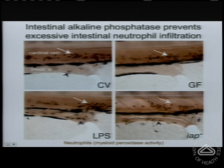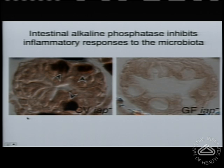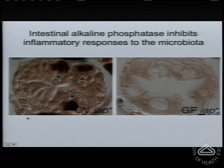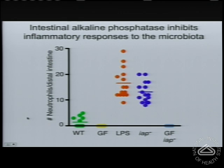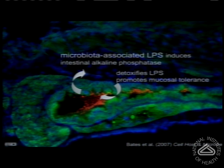To test whether this enzyme modulates responses to microbiota-associated LPS, we looked at neutrophil recruitment into the intestine as a marker for intestinal inflammation. Conventionally reared animals had a low number of neutrophils set by the presence of microbiota, while germ-free animals had a complete absence. Fish genetically engineered to have reduced intestinal alkaline phosphatase activity had an increase in neutrophils — equivalent to having too much LPS. And if we derived these mutants germ-free, the inflammation was alleviated. So there's a dialogue where microbiota LPS induces intestinal alkaline phosphatase, which then detoxifies LPS, promoting an appropriate inflammatory response.